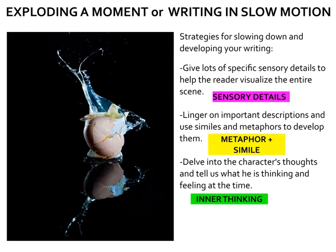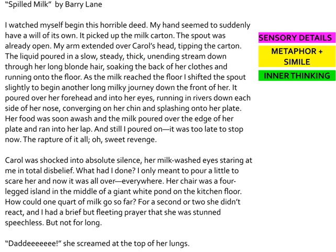I want to look at a really great example of exploding a moment — writing in slow motion — and how an author uses this to create suspense. This is 'Spilled Milk' by Barry Lane. I'm going to read it once through and then we'll look at some of the techniques he uses.